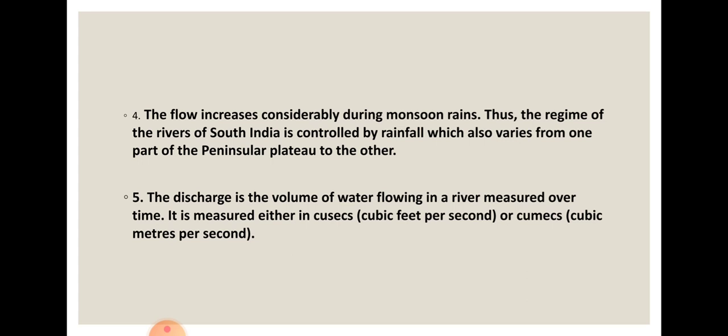Discharge is the volume of water flowing in the river measured over a time interval. It is measured using two units you need to remember: Qsec and QMIC. Qsec means cubic feet per second — that is, how many cubic feet of water pass in one second. QMIC means cubic meters per second — how many cubic meters of water flow per second from a particular river area.